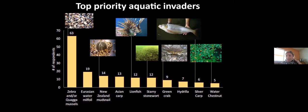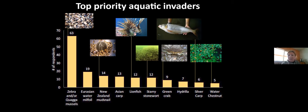When we looked at the species this community was focused on, a number of key aquatic invaders came to light as top priorities. Many respondents were focused on zebra or quagga mussels. We had a range of different life histories and taxonomic groups represented — from Eurasian watermilfoil to Asian carp to lionfish and green crab. Both freshwater, estuarine, and marine invasions were highlighted as invasions of primary concern for management activities.